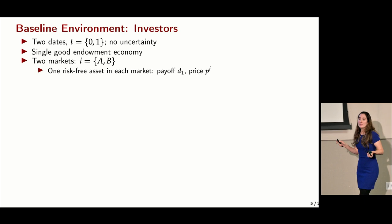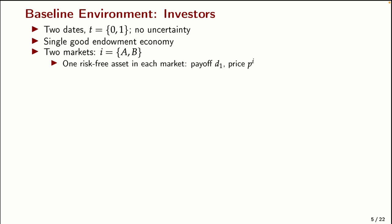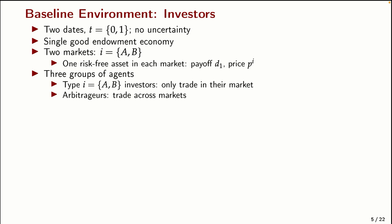The model is very simple. We have two periods, zero and one, with no uncertainty, a single good economy, and two markets indexed A and B. In each market there's a risk-free asset being traded. The risk-free assets have the same payoff at date one, with prices P_A in market A and P_B in market B. We have three groups of agents: investors A who can only trade in market A, investors B who can only trade in market B, and arbitrageurs who can trade in both markets.